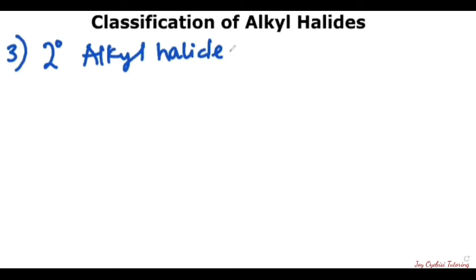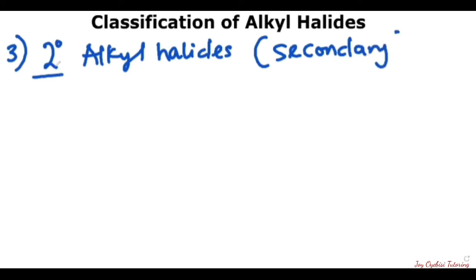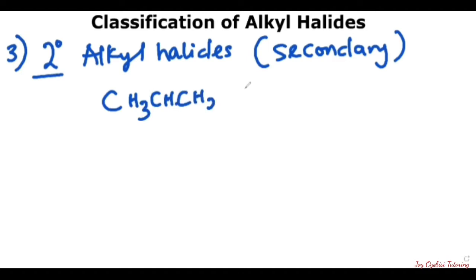The third one would be secondary alkyl halide. This represents secondary. The carbon bearing the halogen has to be attached to two other carbons for it to be a secondary alkyl halide. An example would be this particular one. The way it is could be confusing if you are just starting to learn organic chemistry, so if you are in doubt, just draw them out.